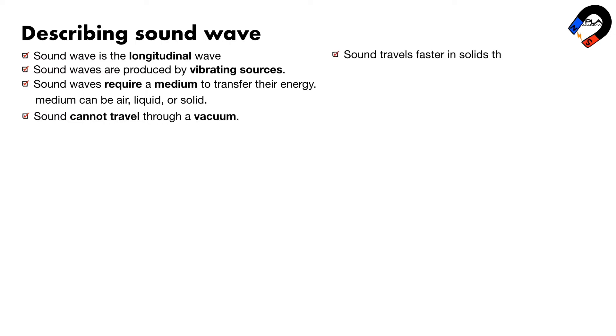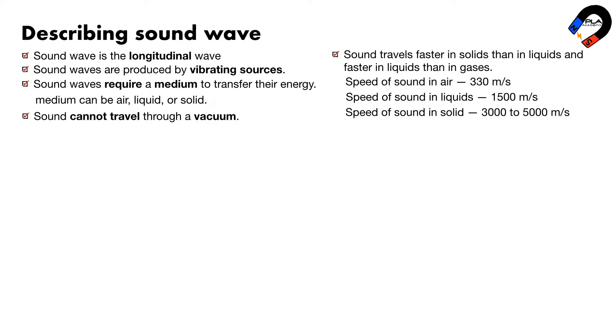The sound travels faster in solids than in liquids and faster in liquids than in gases. The speed of sound in air is approximately 330 meters per second. The speed of sound in liquids is approximately 1,500 meters per second. The speed of sound in solids is approximately 30,000 to 50,000 meters per second.